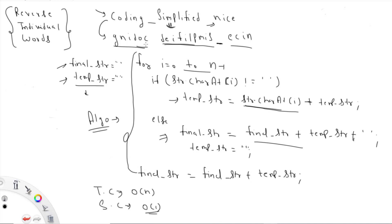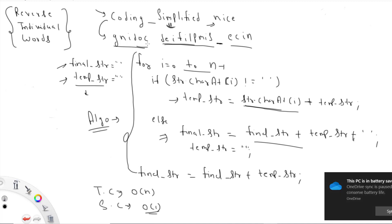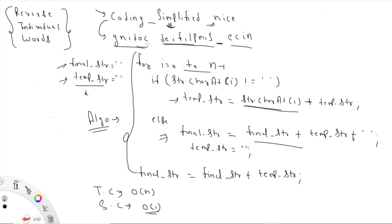We'll see two or three solutions on how we can implement that, then we'll look at time complexity and space complexity, and finally we'll see how to implement it in Java code. Let's think about reversing a single word. In our last problem we also reversed a particular string — we take a blank string and keep on adding elements at the starting.